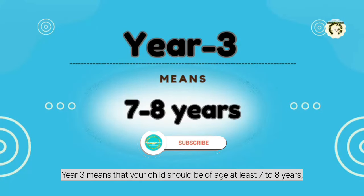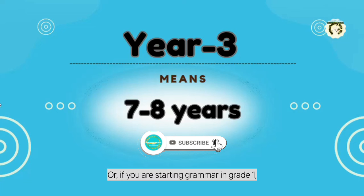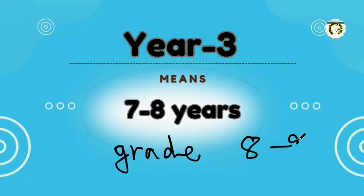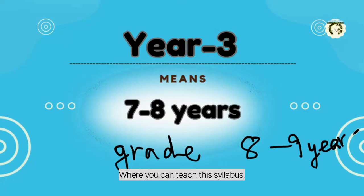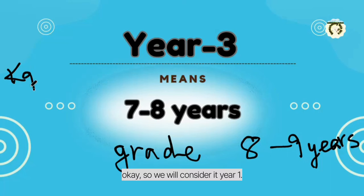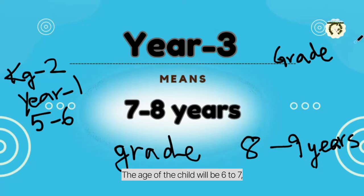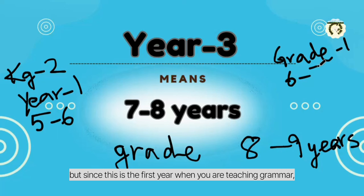Year 3 means that your child should be at least 7 to 8 years old, or if you are starting grammar in grade 1, then year 3 will be for 8 to 9 year olds. Just to make it more clear, if you start grammar in KG2, we consider it year 1 and the age of the child is 5 to 6. But if you start grammar in grade 1, the age of the child will be 6 to 7, but since it's the first year of teaching grammar, you will still give them the year 1 English grammar syllabus.